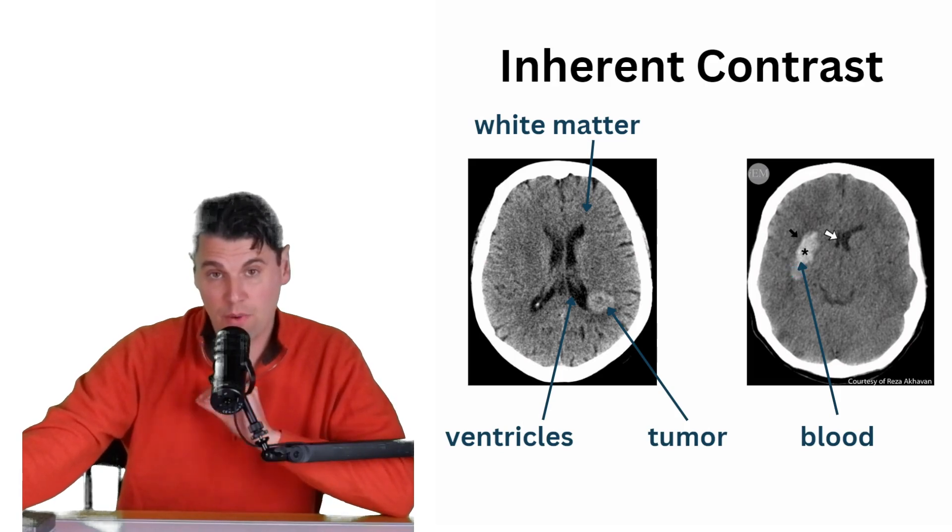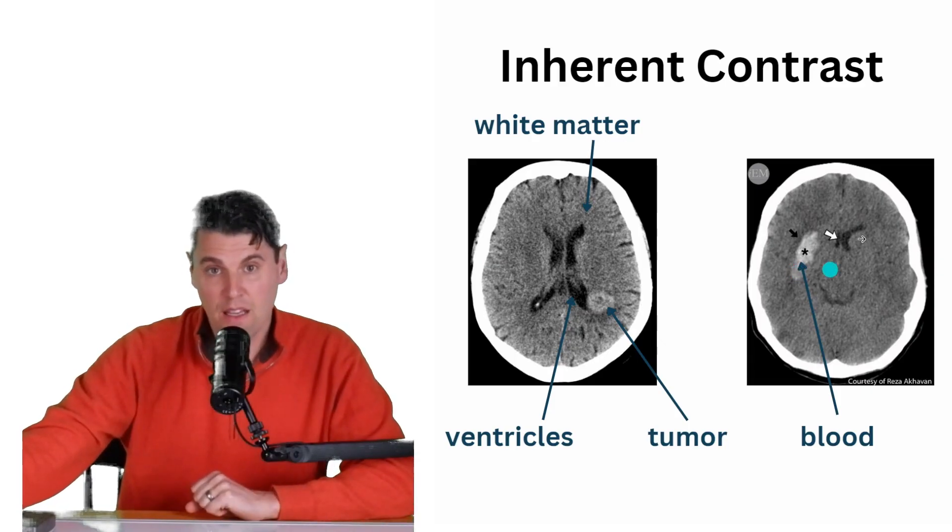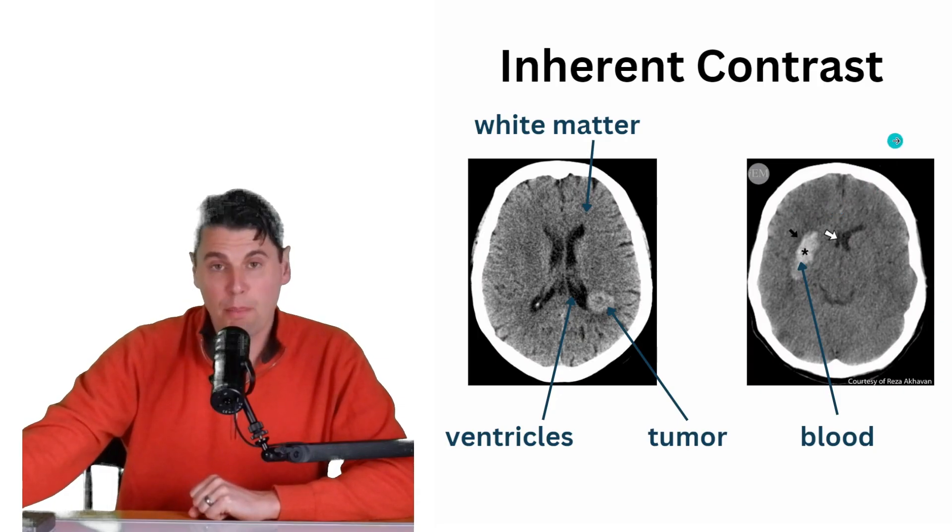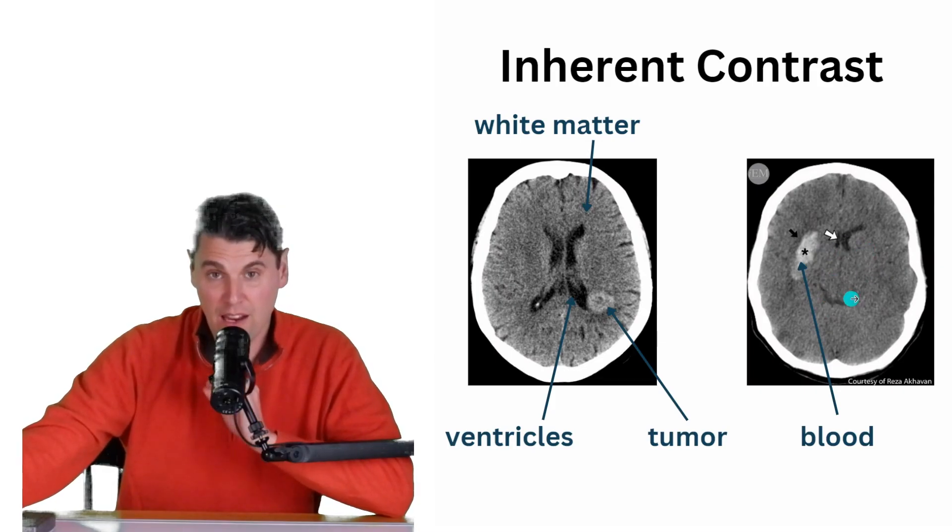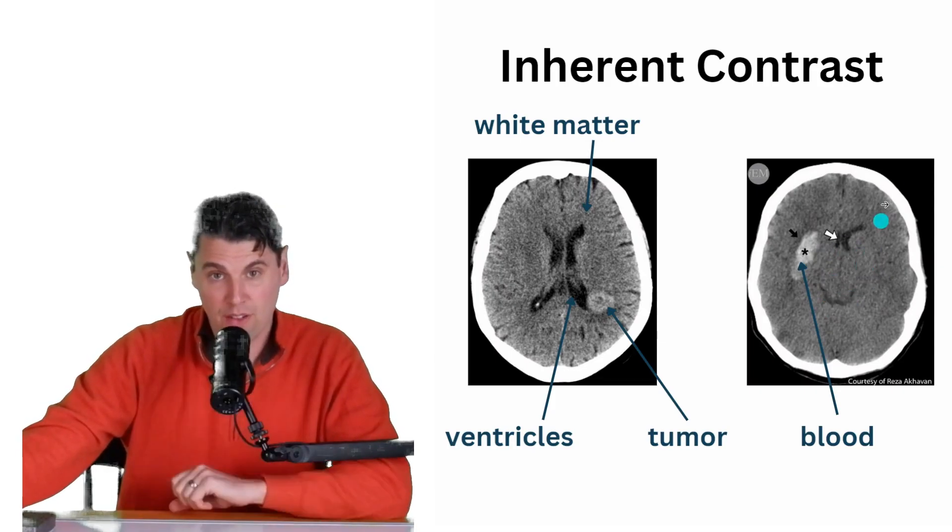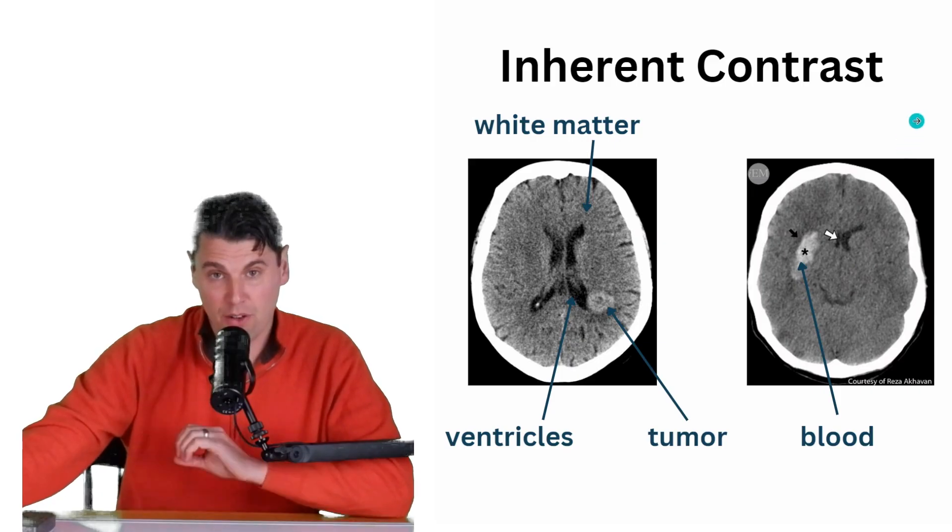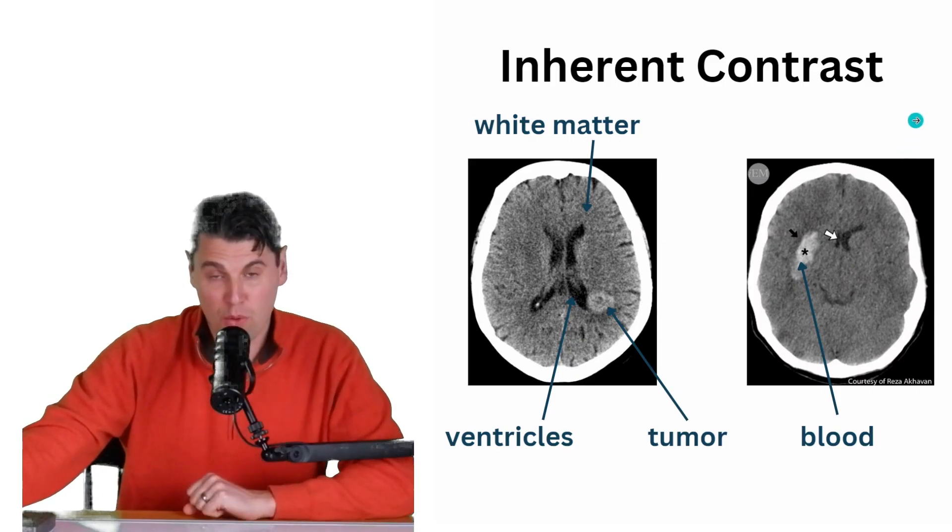You can see on a non-contrast CT of the head, you can see a lot of the soft tissues. You can see the cerebral spinal fluid. You can see the white matter. The white matter is right here. You can see the cerebral spinal fluid here in the ventricles. You can see a tumor here. In the case of blood, you can see blood from the relatively recent bleed out with the inherent contrast of a CT.